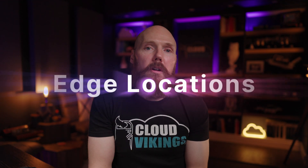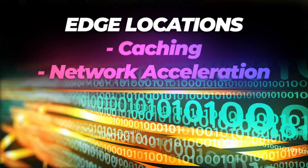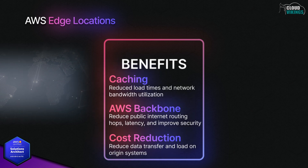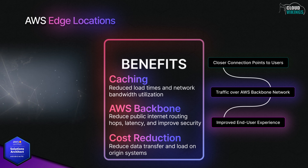The other core concept to be aware of are edge locations. There are a lot more of these than region locations. These are special AWS data center facilities that focus on caching data and network acceleration. These edge location points of presence can cache data so that it's closer to the end users that access it, or help get users accessing AWS services onto the AWS backbone network of their super high bandwidth fiber links as quickly as possible. They offer a closer connection point to global users to access the AWS backbone network, helping them avoid the public internet as much as possible, reducing network latency and providing a better overall experience.